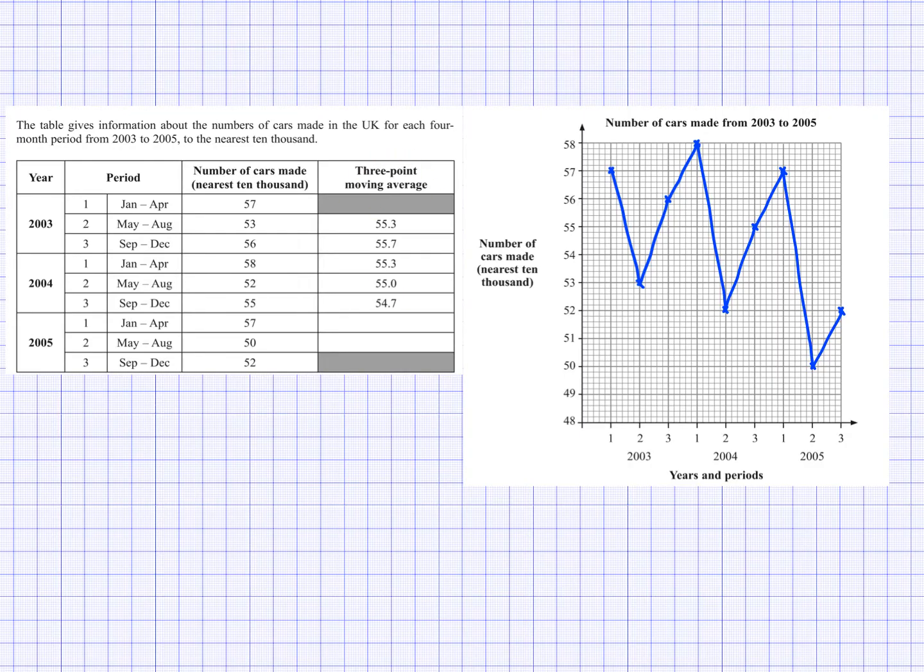So what I'm going to do is I'm going to complete the three point moving averages for these last two sections and I'm going to show you how we get that. So this first value here, 55.3, you will get that value if you find the mean, the arithmetic mean for these three values. So 57, 53 and 56, add them up and divide it by three, you should get 55.3. And notice 55.3 is sort of matched up to the middle of the three values there. And then this 55.7 would have come from 53, 56 and 58, add them up, divide by three, you will get that value.